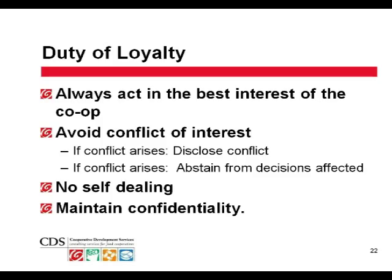Your duty as a board member is to act in the best interest of the co-op — not in your best interest or the interest of somebody else, but only in the best interest of the co-op. It also means avoiding conflict of interest. A conflict of interest arises when you have a personal interest in a decision you are making as a board member. You're supposed to be making it strictly on behalf of the co-op, but you may have a personal interest as well. If such a conflict of interest arises, the first thing you need to do is always disclose it, making it very clear what the nature of the conflict is. Generally speaking, you should also remove yourself from both the discussions and the decisions regarding that issue.